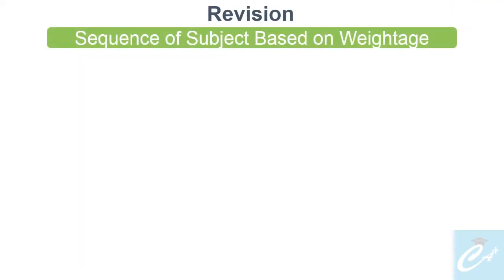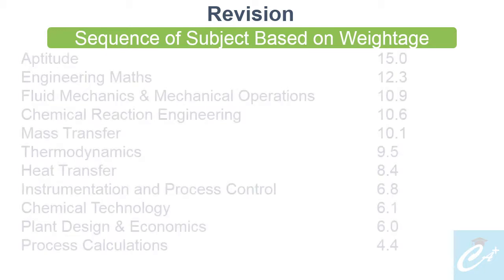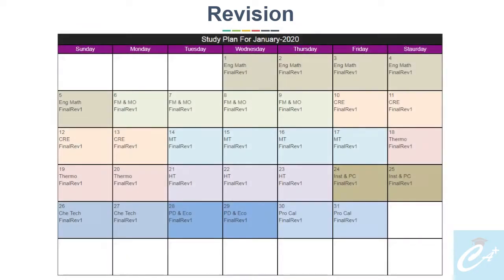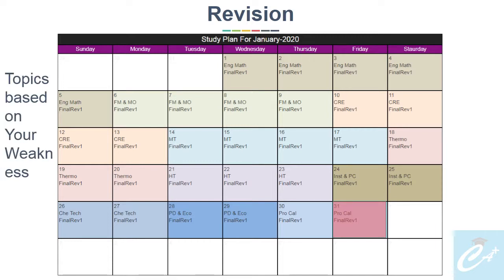Now let's see the next point, which is revision. You should have a sequence based on the weightage and difficulty of subjects. The weightage of subjects is decided based on average marks asked from these subjects between 2014 and 2019. Based on this, the revision plan in January will start from 1st January and end on 31st January. We have not given specific topics in this period — the idea is you can choose topics where you are weak, or use the customized plan tool to get topics based on weightage.